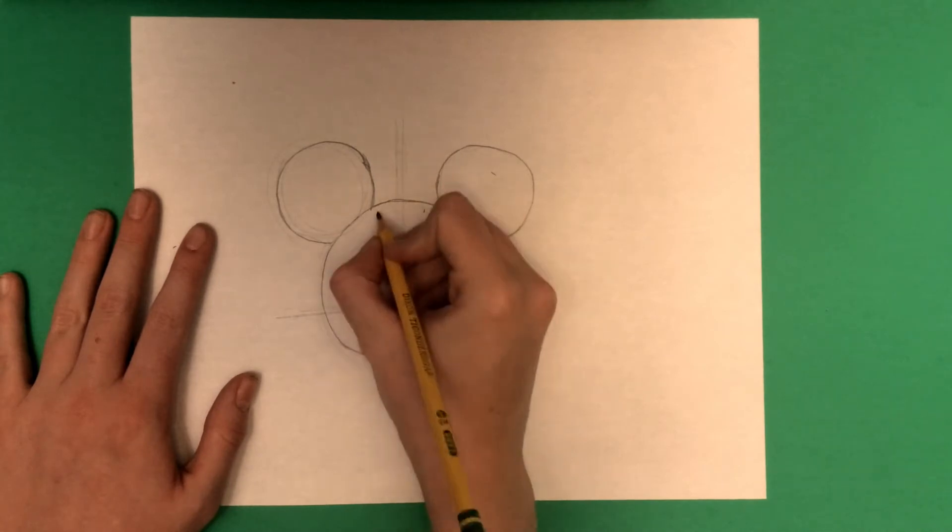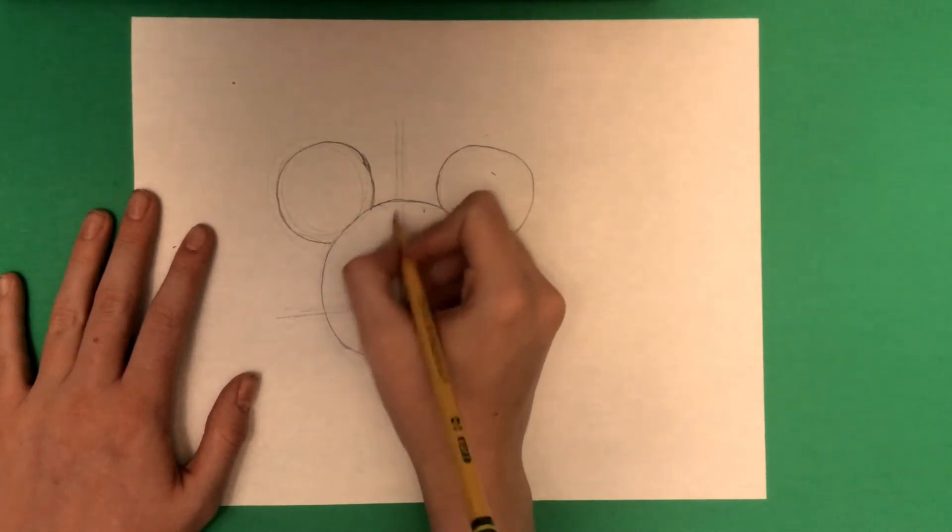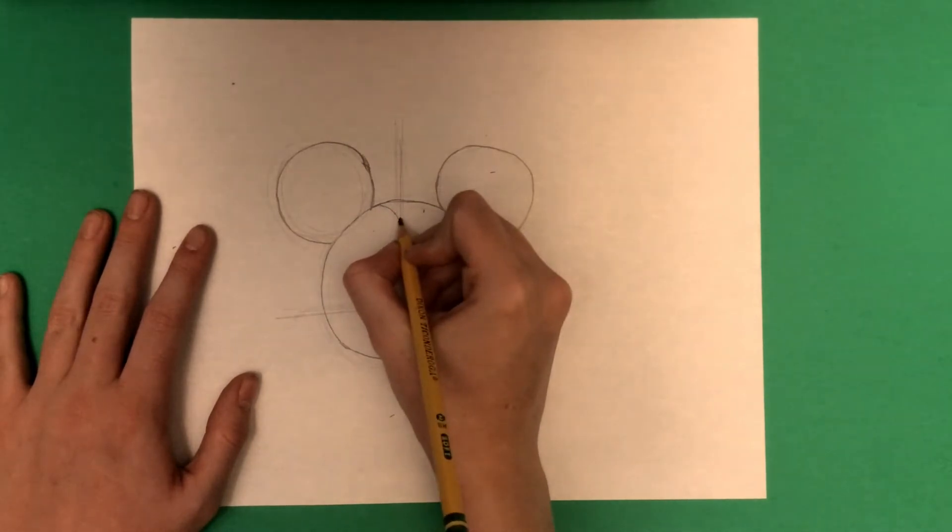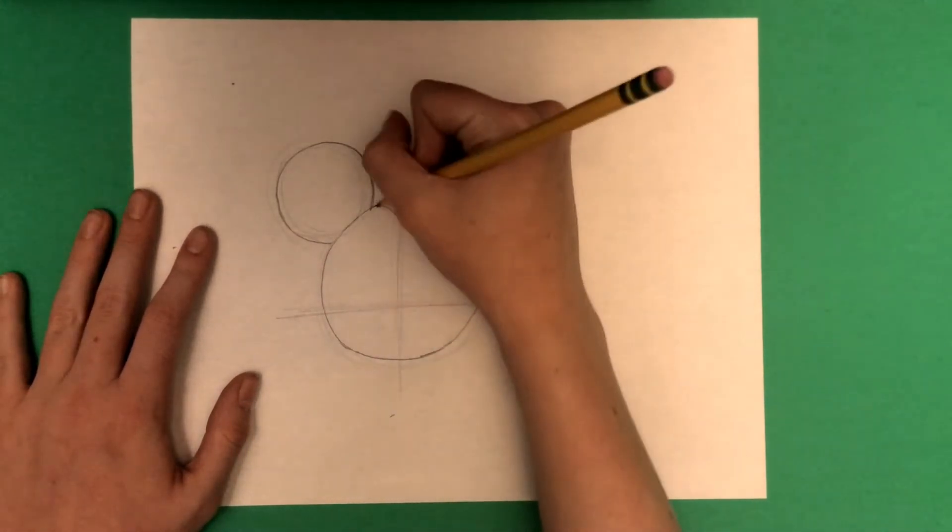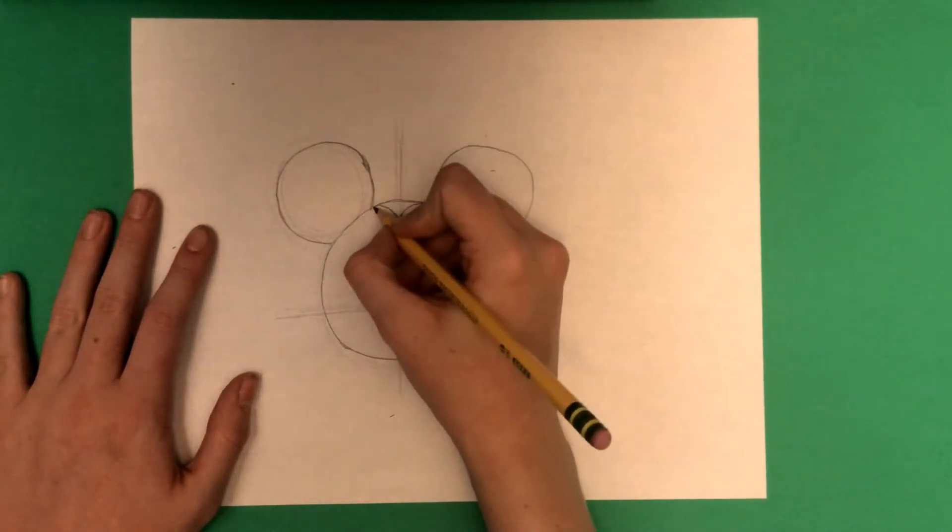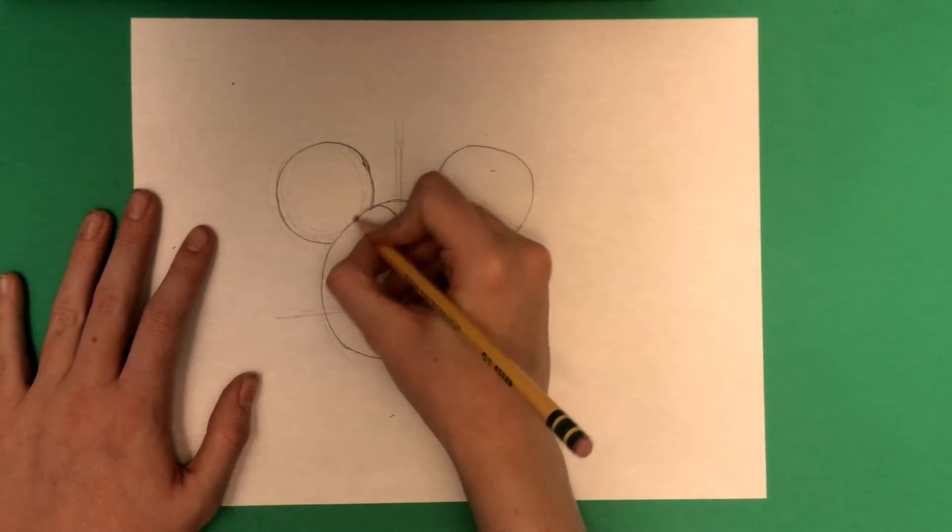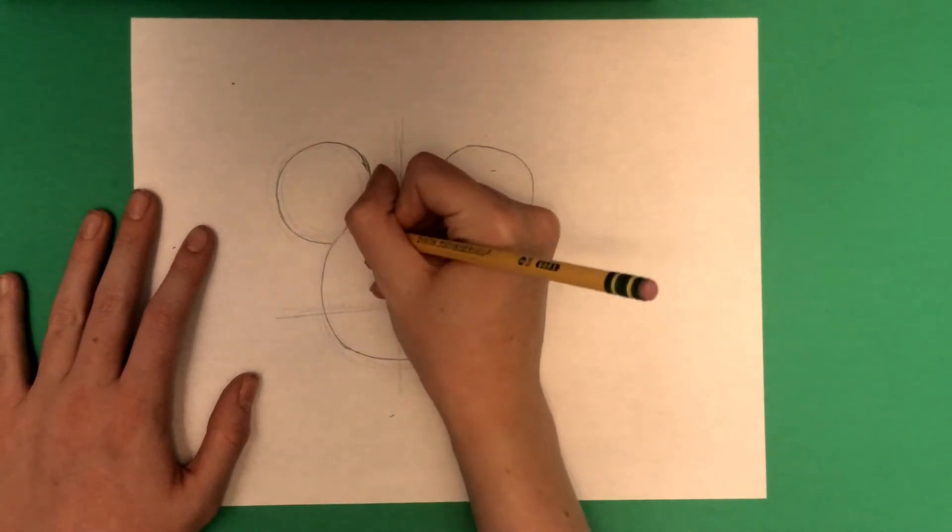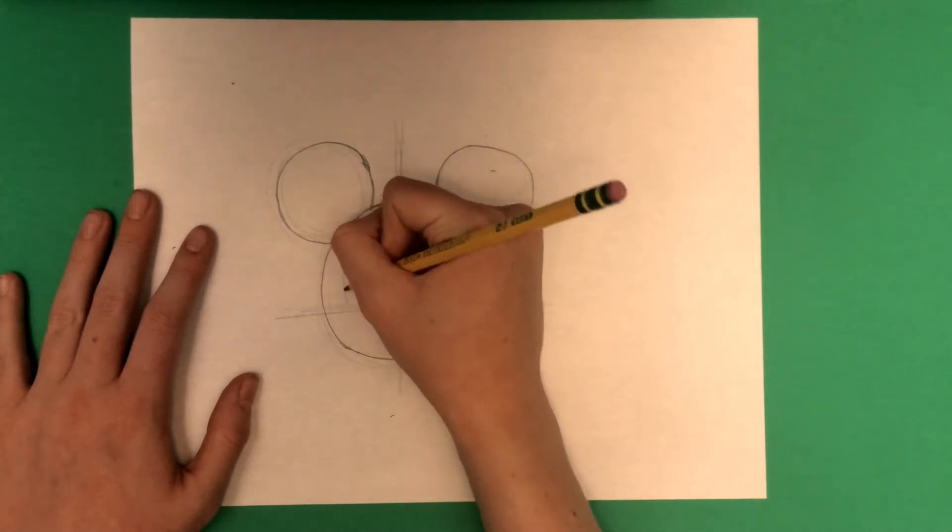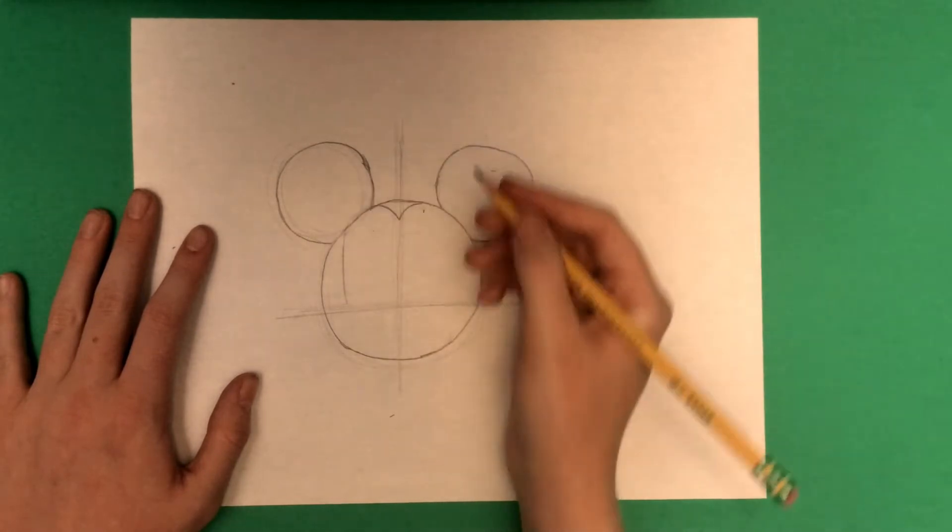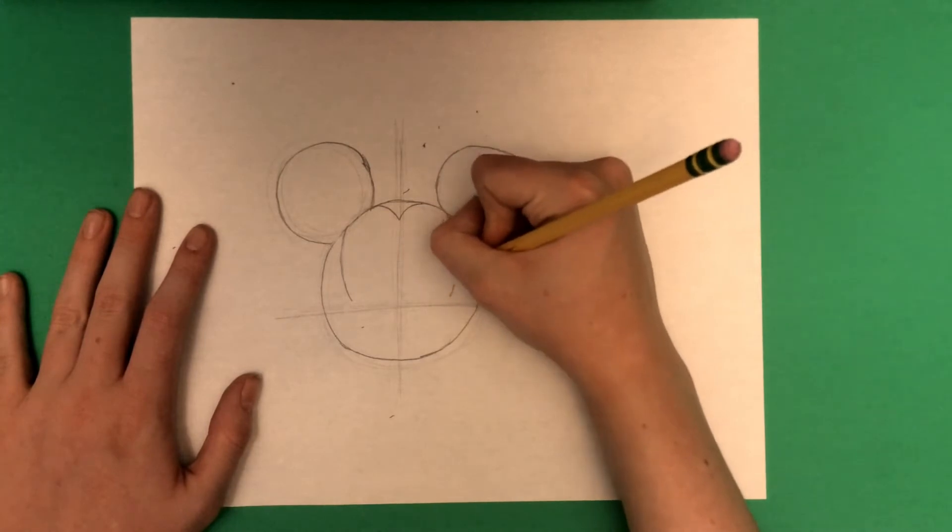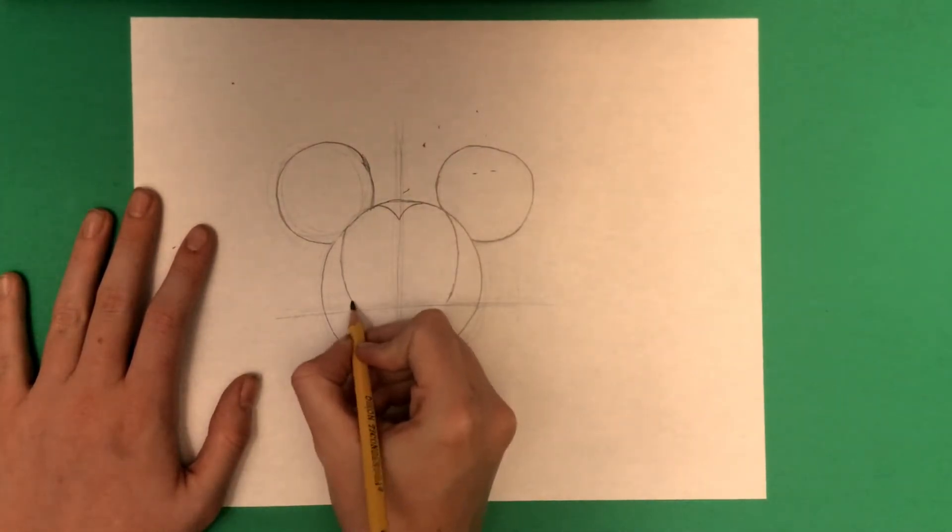Now we're going to start with his face. We're going to make a little V, sort of. Now you're just going to need to make a sort of little curve that connects right on that line that you just made. It should sort of look like that. Then you're going to connect that all the way down to that horizontal line. Make a small little curve, like a parenthesis.